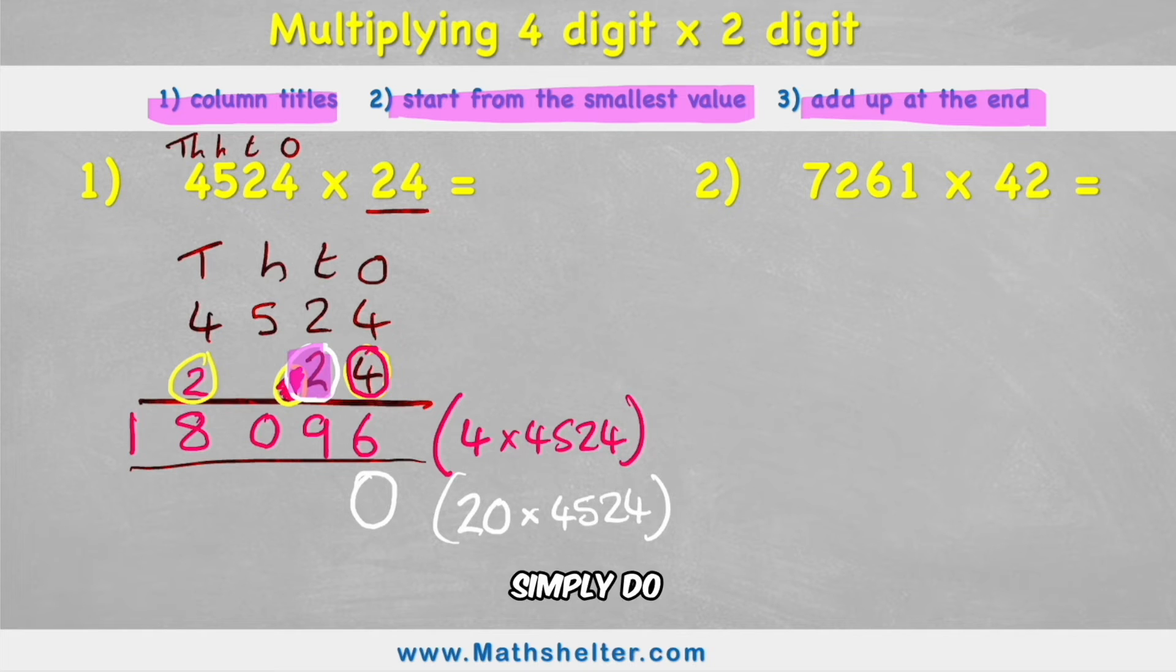So now I can simply do 2 times 4 rather than thinking that there's a 20. 2 times 4 is 8. Next question is 2 times 2. 2 times 2 is 4. Then I have 2 times 5. 2 times 5 is 10. Carry the 1 across. Put the 0 in place. And then 2 times 4 is 8. Add my 1 is 9. Get rid of that 1 so we don't add it up by mistake. So 90,480 is the answer to 20 times 4524.